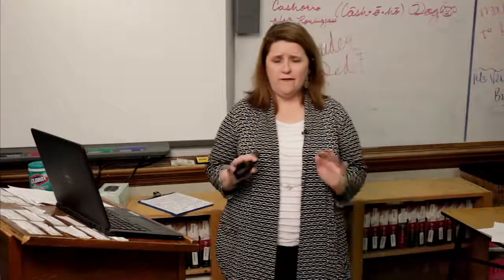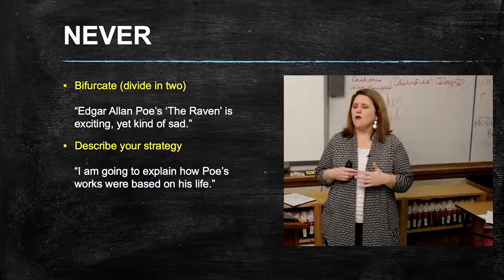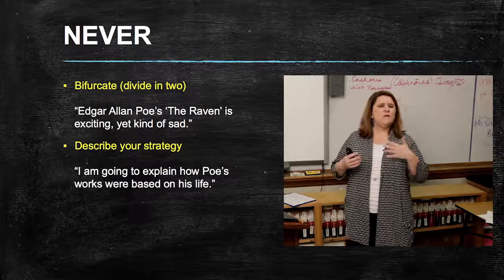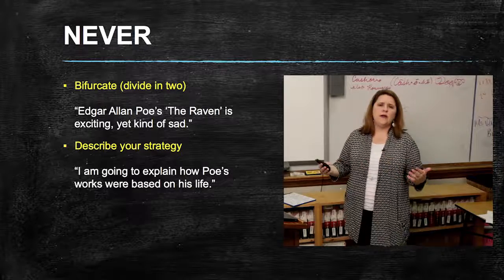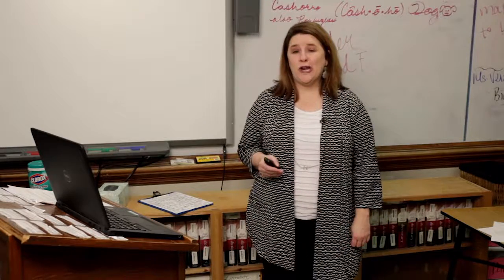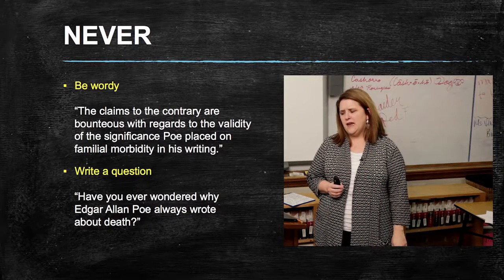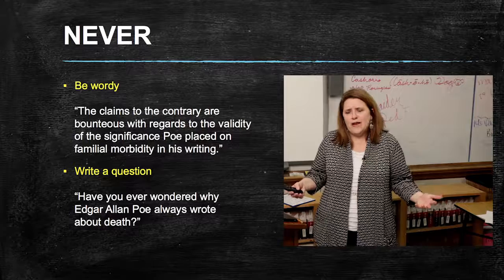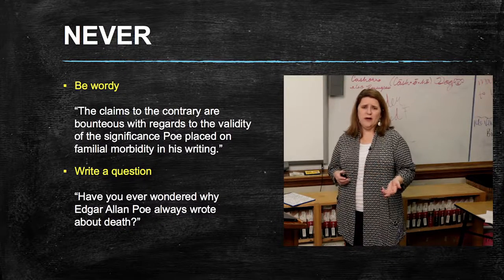Make sure you never do the following things. Never bifurcate — that's just a fancy word for 'divide into.' For example, don't say 'Edgar Allan Poe's The Raven is exciting, yet kind of sad.' Another thing we don't want you to do is don't describe your strategy — don't say 'I am now going to explain to you the works of Edgar Allan Poe.' Make sure that you're not too wordy — for example: 'The claims to the contrary are bounteous with regards to the validity of the significance Poe placed on familial morbidity in his writing.' That once again doesn't sound very natural. And make sure that you never write a question — for example: 'Have you ever wondered why Edgar Allan Poe always wrote about death?'